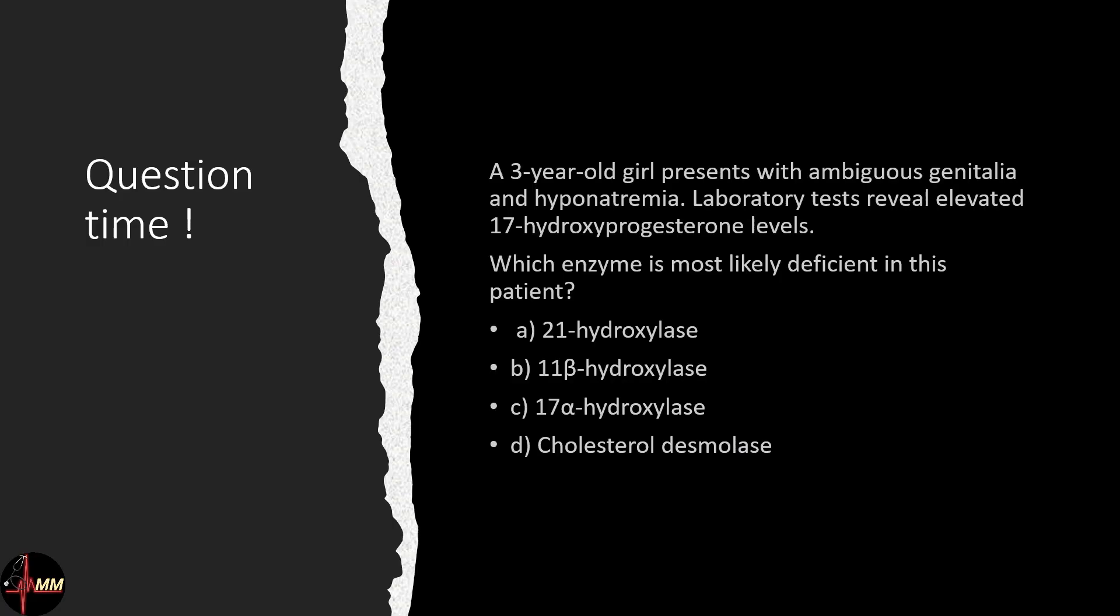A three-year-old girl presents with ambiguous genitalia and hyponatremia. Laboratory tests reveal elevated 17-hydroxyprogesterone levels. Which enzyme is most likely deficient in this patient? Comment your answer below.